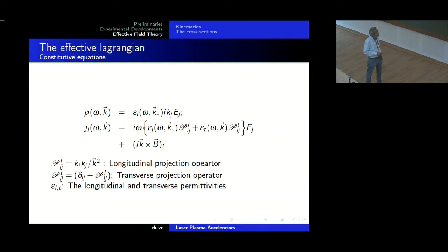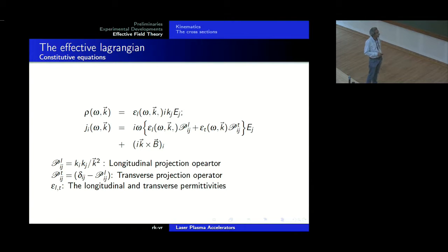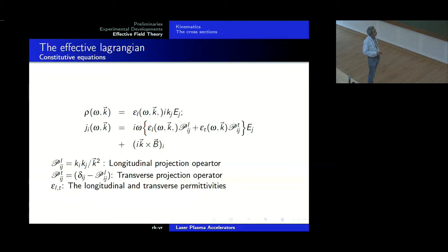First, what we do is write down Maxwell's equations in Fourier space. We have the Coulomb law here and the Ampere law here. I have introduced the longitudinal permittivity and the transverse permittivity. J is curl of B and that is the delta E by delta t term — that is the reason why I have i omega. I have the longitudinal projection operator and the transverse projection operator with my corresponding permittivities. This is basically plasma physics 101, from Landau-Lifshitz volume 10, Physical Kinetics. The relevant scales are the plasma frequency, the Debye length, the thermal velocity.